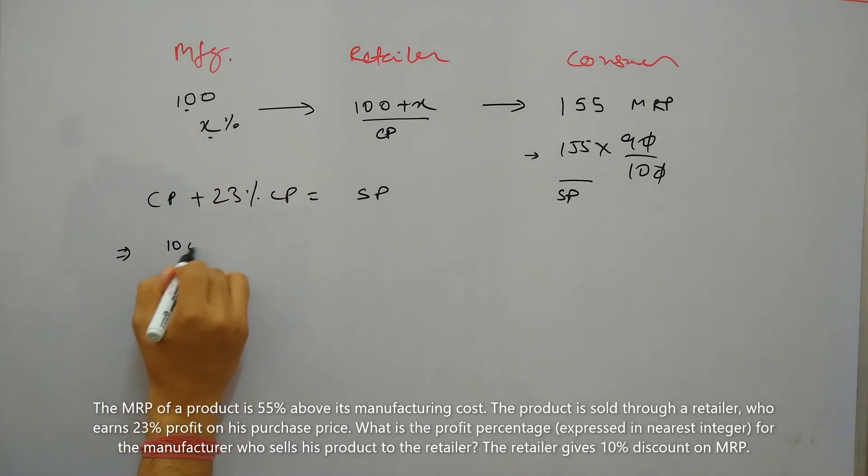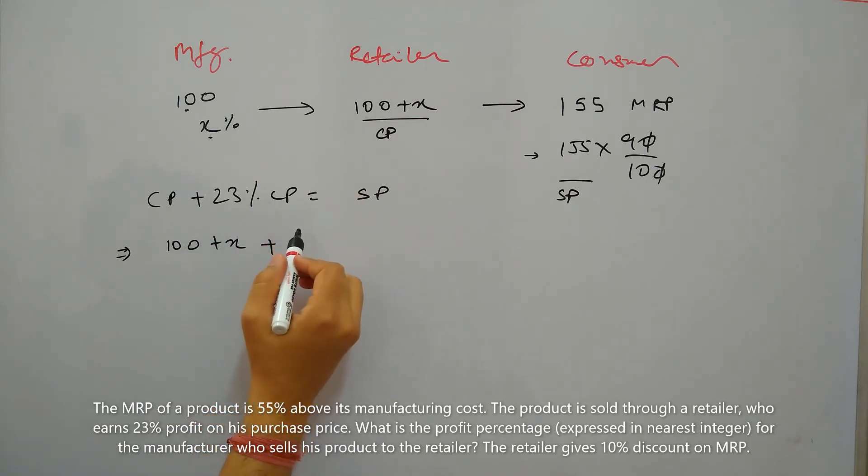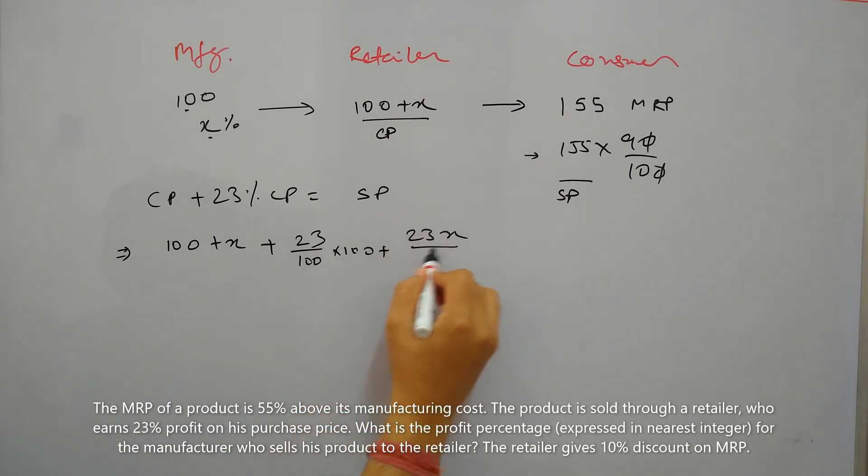So cost price is 100 plus X, and adding 23% of cost price gives us 100 plus X plus 23 by 100 times 100 plus 23X by 100, which equals selling price. And selling price is 155 times 9 by 10.